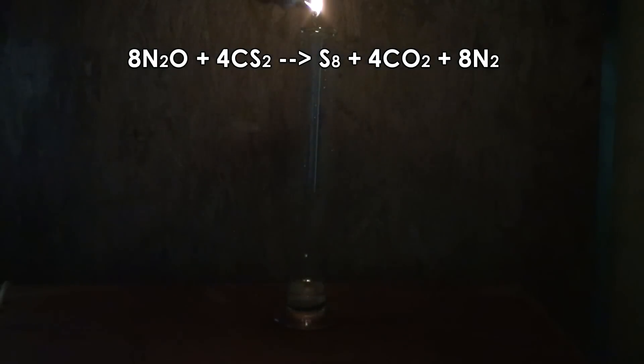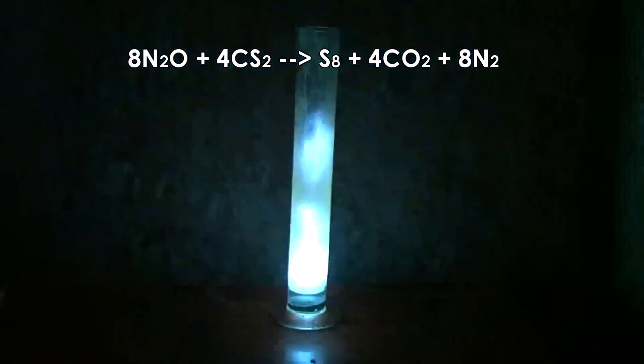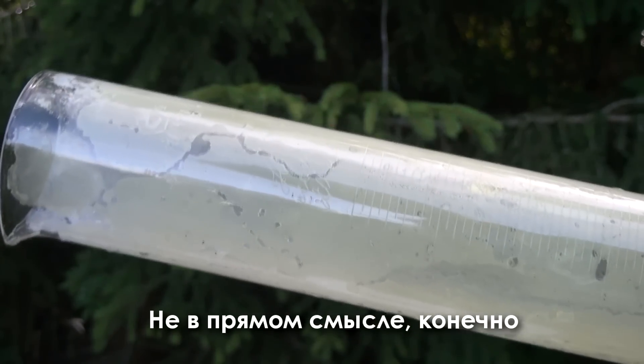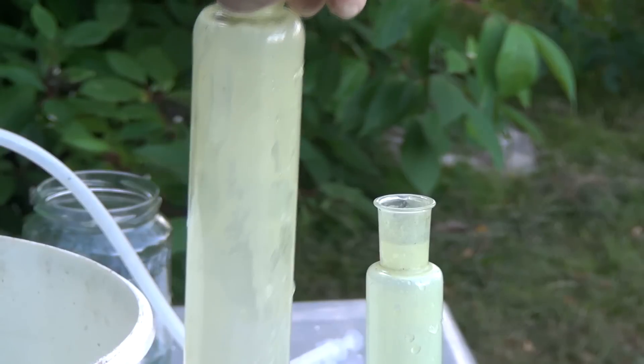The equation of this reaction is carbon disulfide reacts with nitric oxide which releases carbon dioxide, nitrogen and sulfur which is then deposited on the walls of the cylinder and which is very inconvenient to wash off.